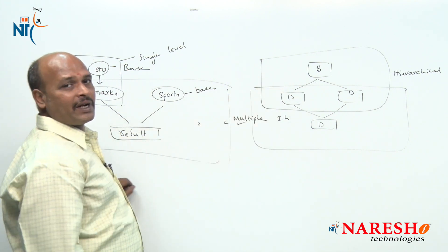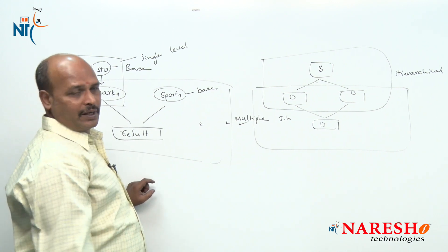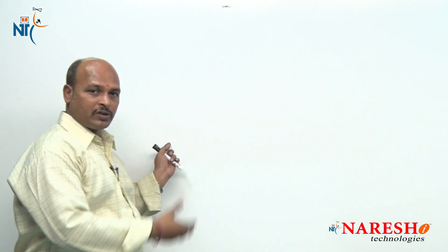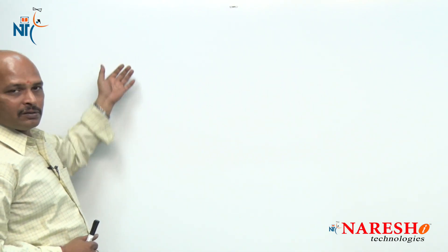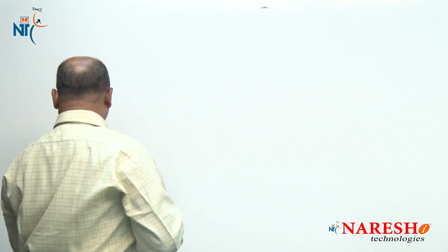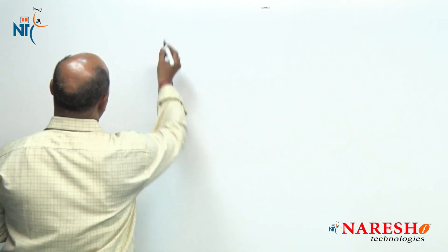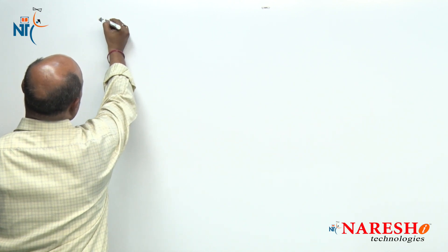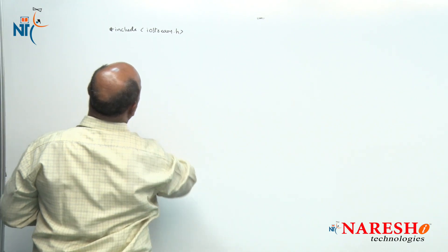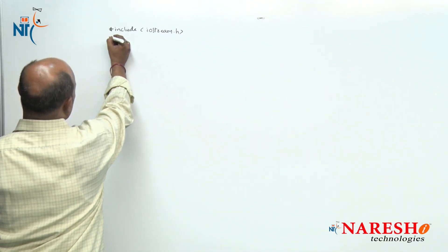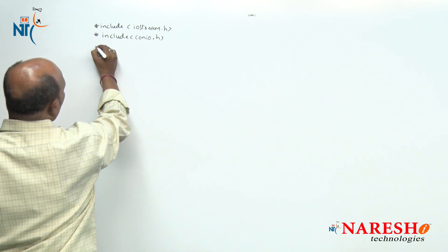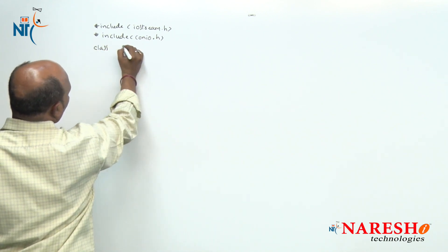Now I am going for the implementation part. I am going to give the same example — student, marks, sports, result. Now how to code this example? First, common header files: hash include iostream.h, next hash include conio.h. Now I am going to declare the first base class — class student.